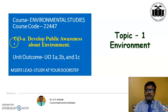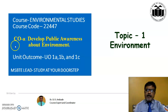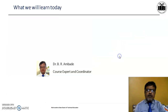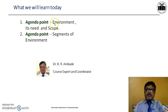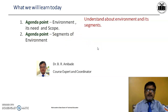We have to satisfy COA, that is Develop Public Awareness about the Environment. For this, we have to study Unit Outcomes UO 1A, 1B, and 1C. These are the agenda points of today's lecture. First is Environment, its need and scope. Second is Segments of Environment. The takeaway is to understand about environment and its segments.